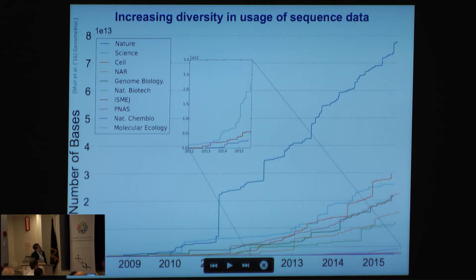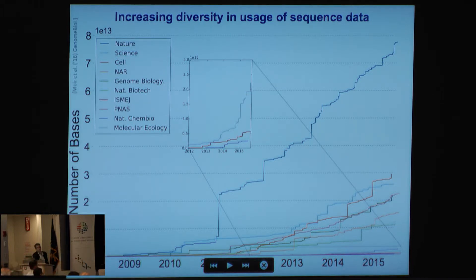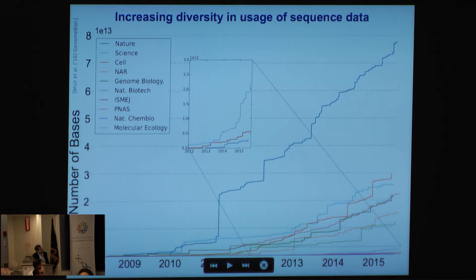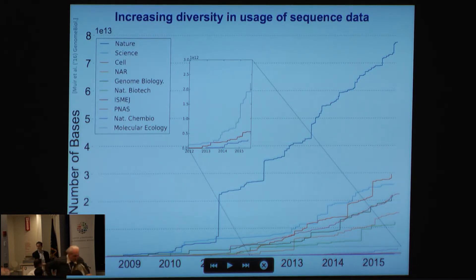This picture shows the number of bases associated with publications in different journals — the different lines are different journals. This line here is Nature, which has traditionally dominated genomics, while other lines show Science, Cell, Genome Biology, and other prominent journals. What's really interesting is down here: journals such as Nature Chemical Biology and Molecular Ecology, where we see sequencing technology and sequencing ideas diffusing into these fields.